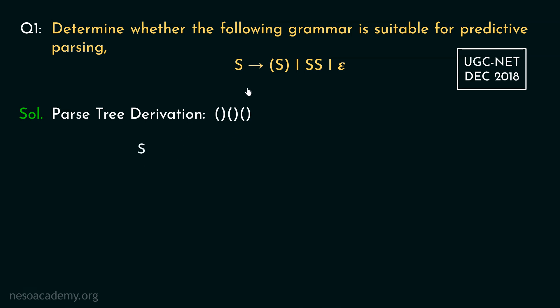We will use the second rule, that is, S can be written as SS. So S derives SS. Now from this S, using the first rule, we will derive the left parenthesis, then S and then the right parenthesis. And from this S, using the second rule, we will derive two more S.